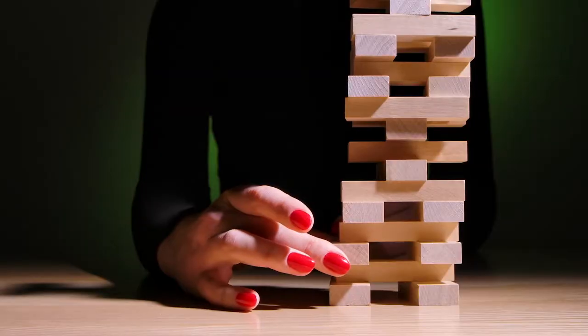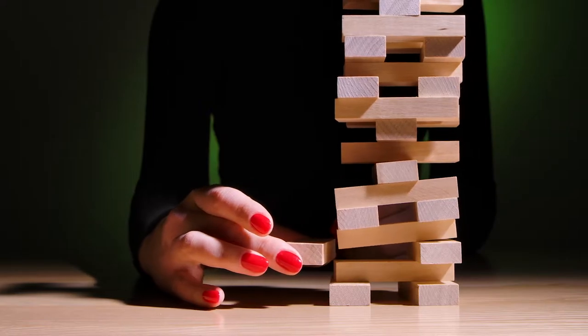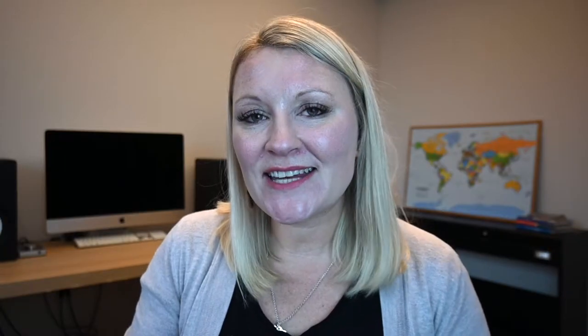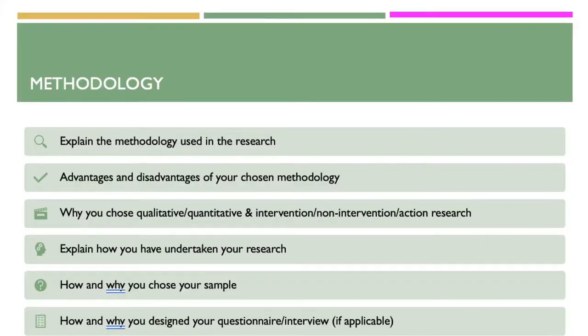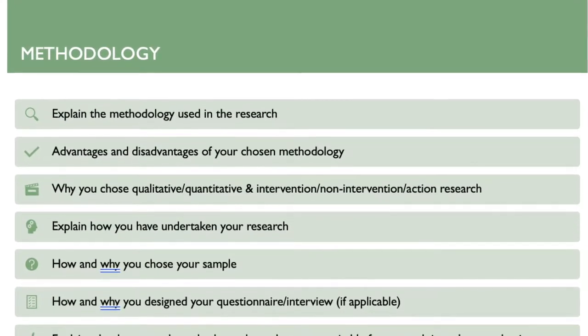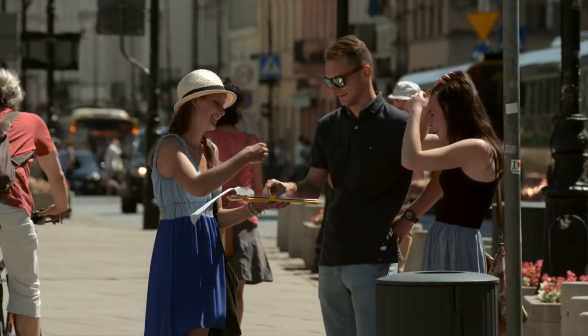The next section of your research project is the methodology. This is also a very important section. If your methodology is weak, then your whole project is going to be weak. You need to demonstrate that you've thought about it, that you know what you're talking about, and that you know why you're doing what you're doing. In this section, I recommend that you explain what methodology you're going to use, then justify it and explain why — for example, why you're doing questionnaires — and back it up with lots and lots of references. You cannot just say 'I'm going to do questionnaires' — or you can, but you won't get a good grade.